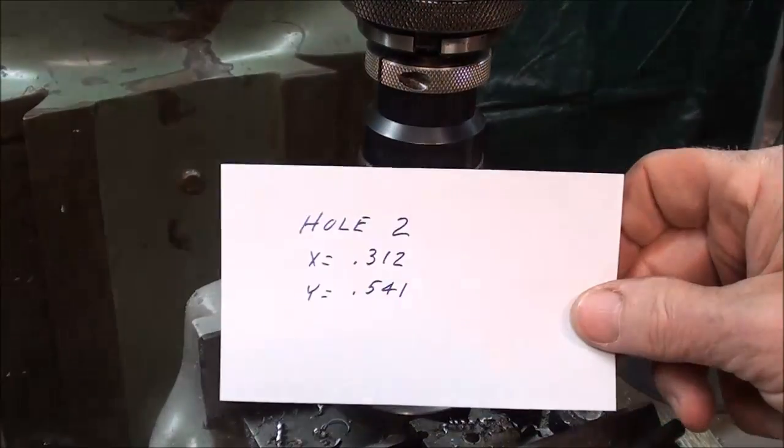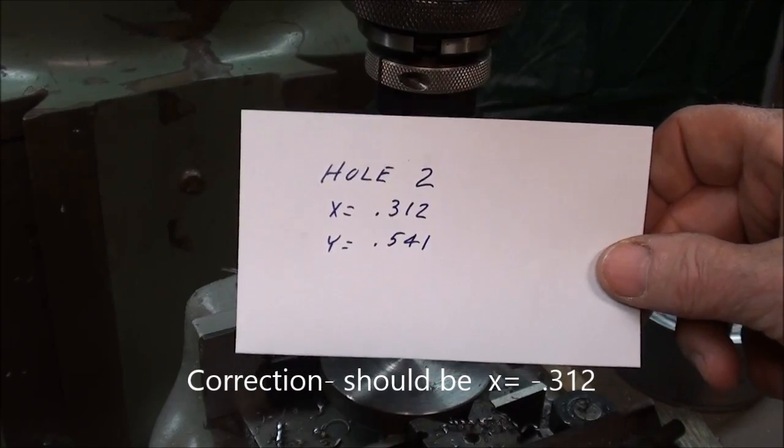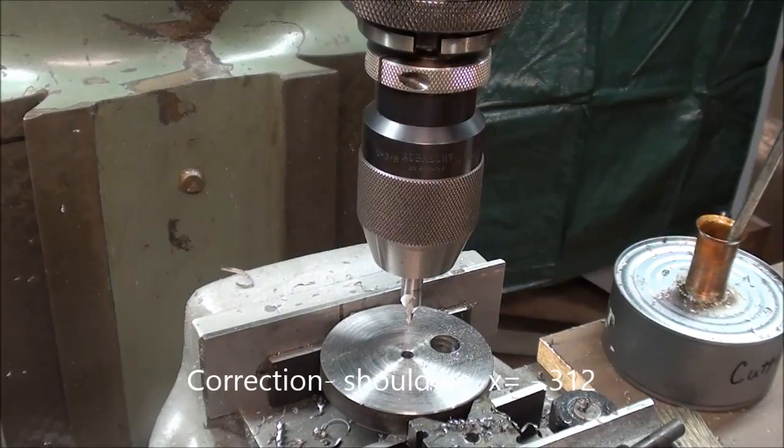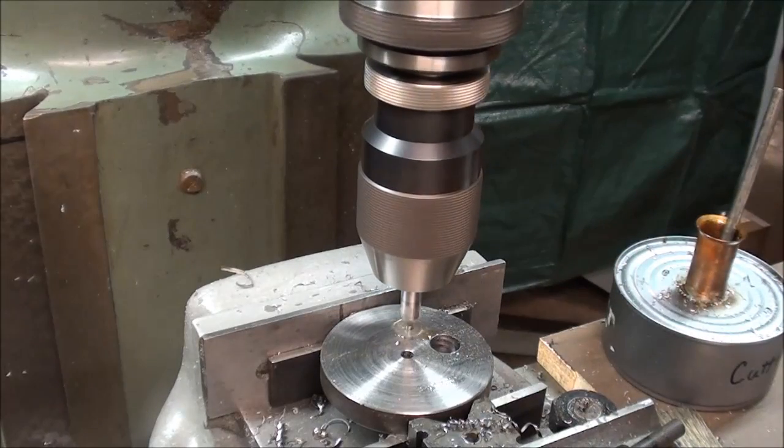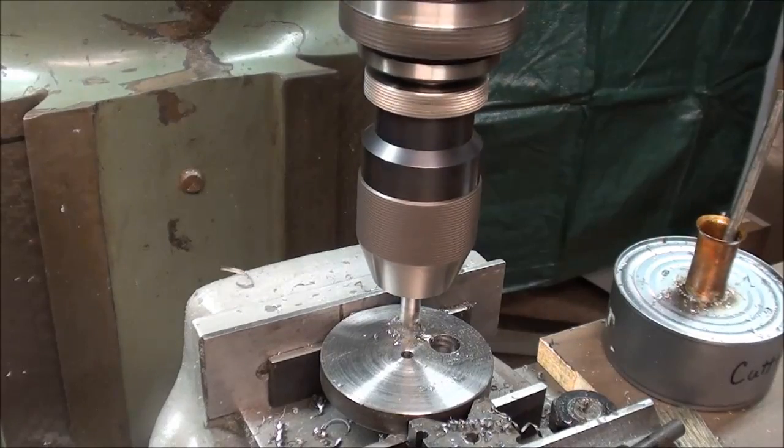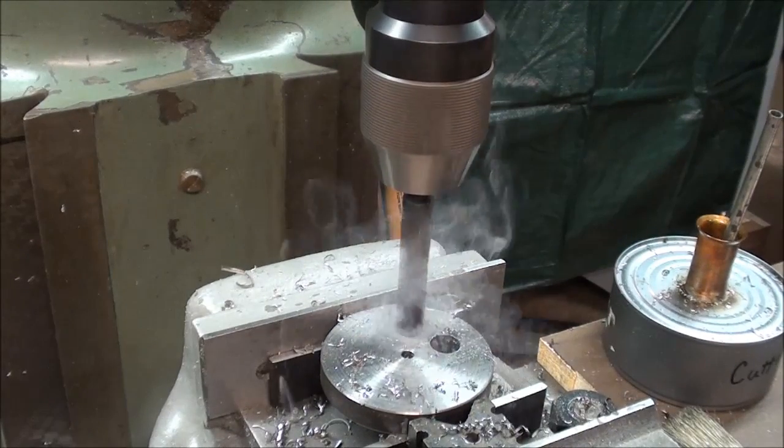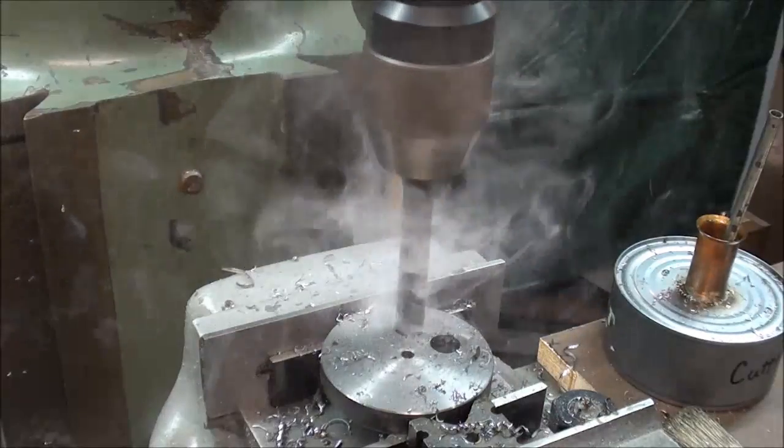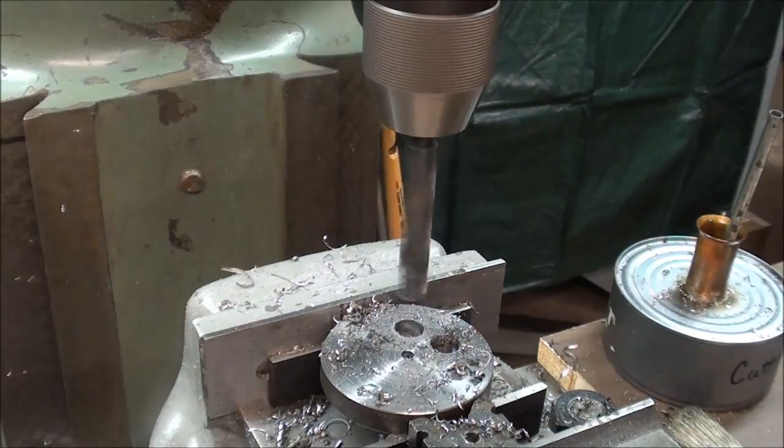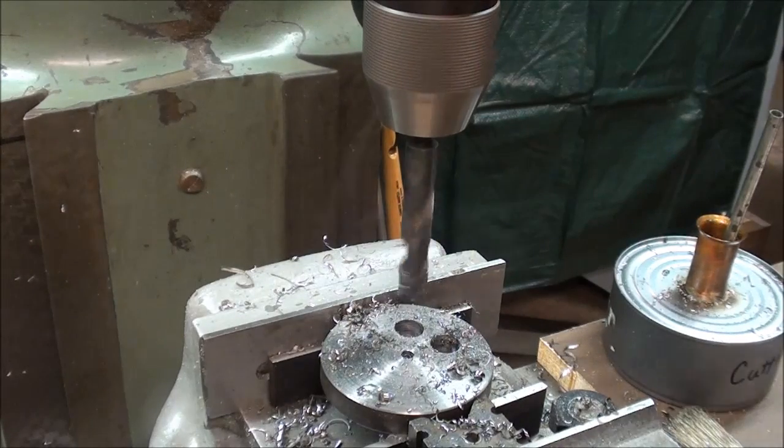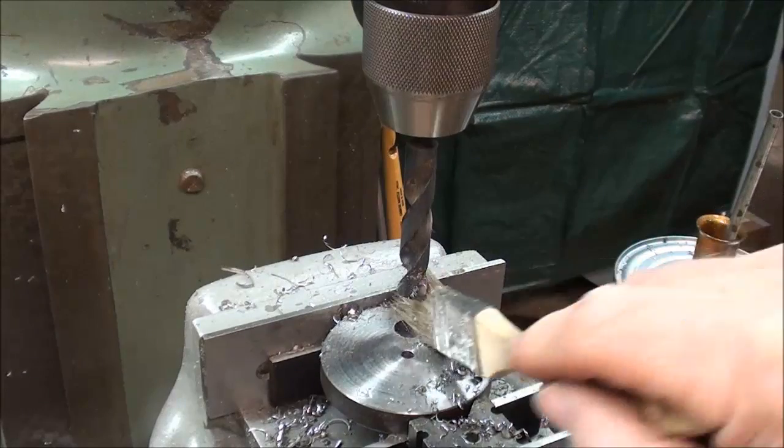Now I've moved the table for hole 2, which is x equals 0.312, y equals 0.541. Now I'm not going to show all of these. Be sure and wear your safety glasses and observe all safety rules when you're drilling or doing any operation on the mill, or for that matter, any machine. And that's hole 2 already.